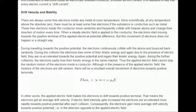Again, during the further collisions, the electrons partly lose their kinetic energy in the same manner. Thus, the applied electric field cannot stop the random motion of the electrons inside a conductor. Although in the presence of the applied electric field, the motions of the electrons are still random, there will be a resultant overall movement of electrons towards positive terminals.